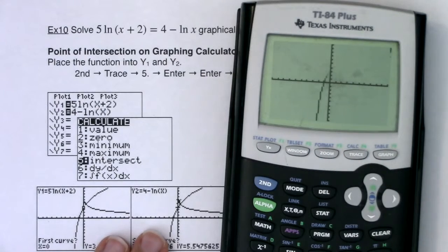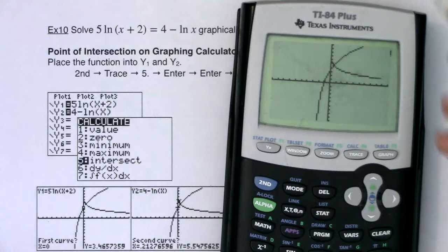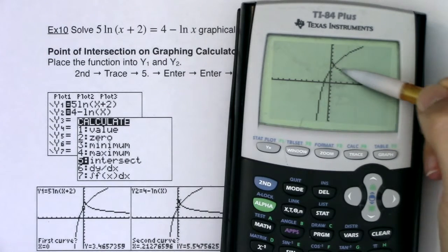So let's hit zoom six and see if they intersect. They might, they might not. Oh, they do. Okay, so I can kind of see the intersection here.